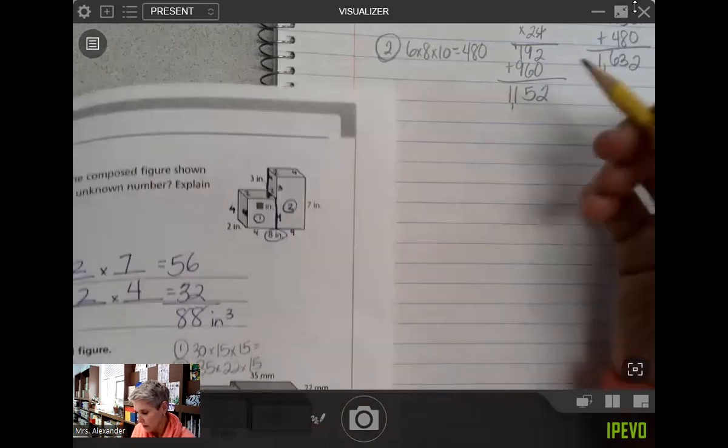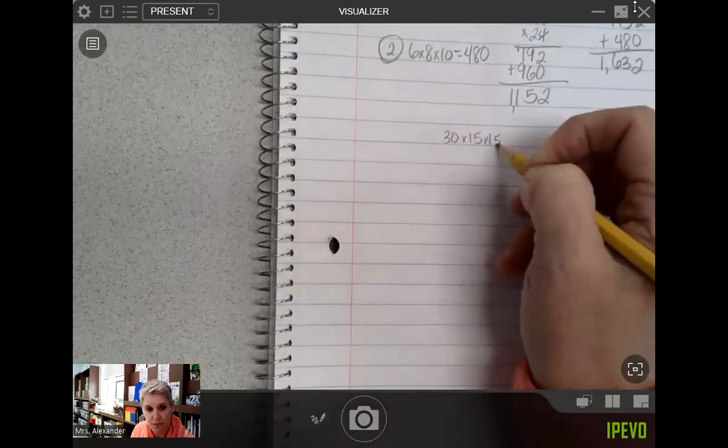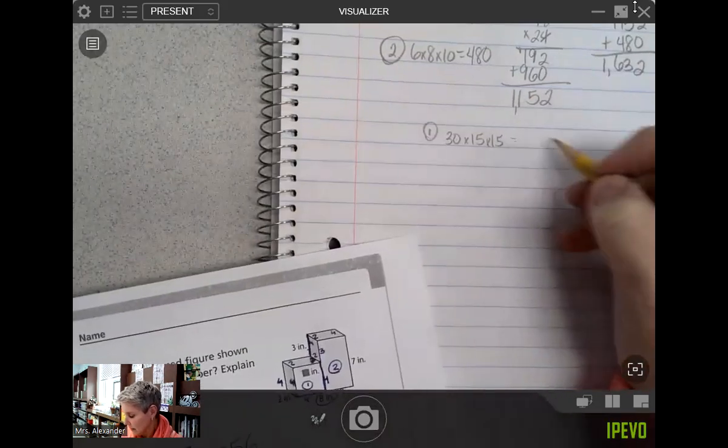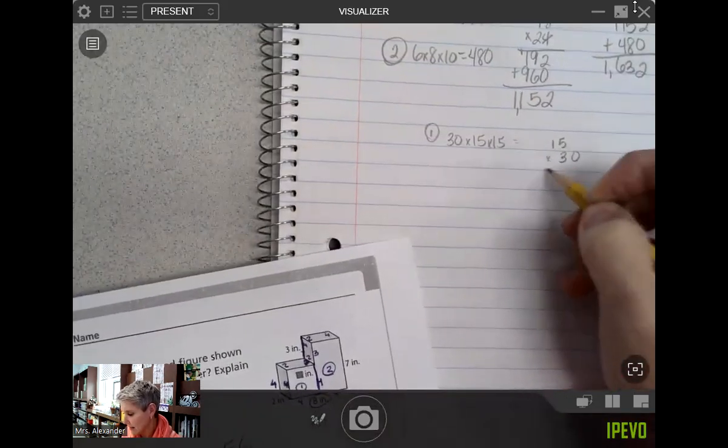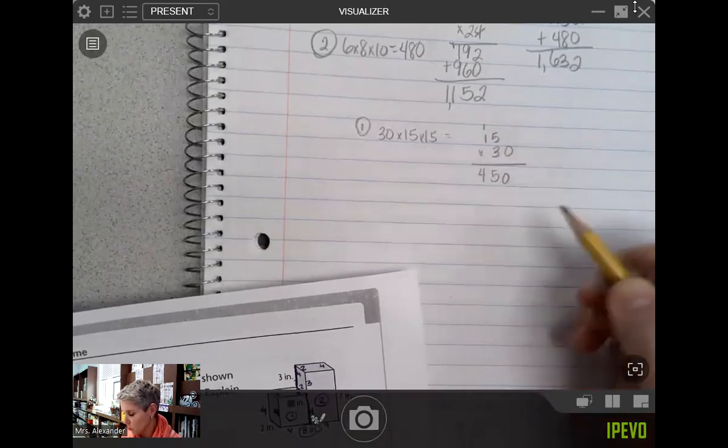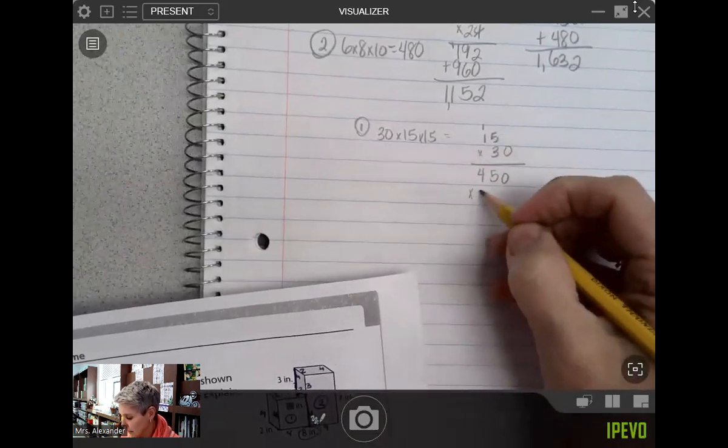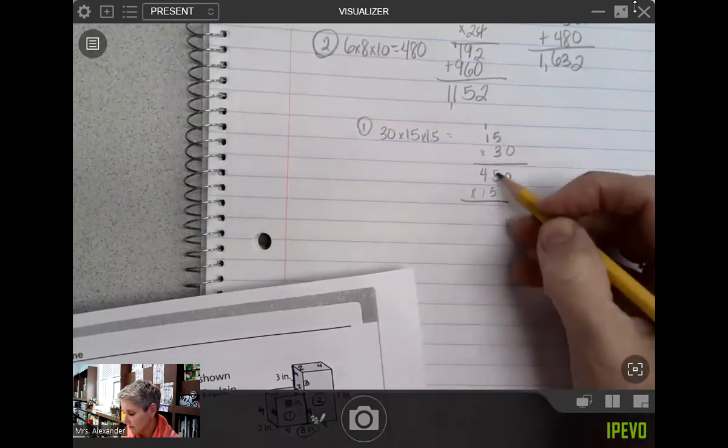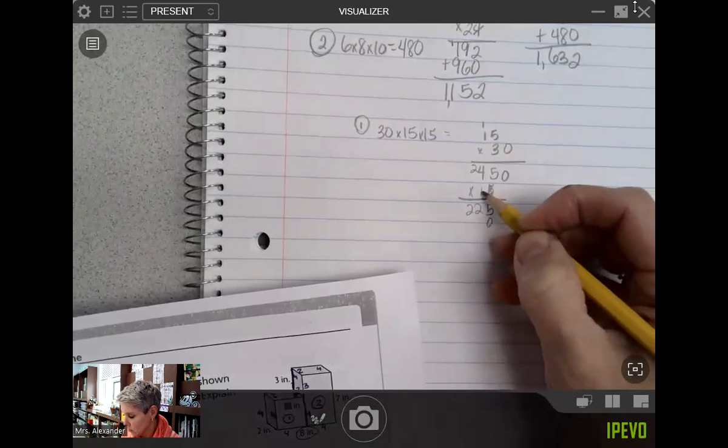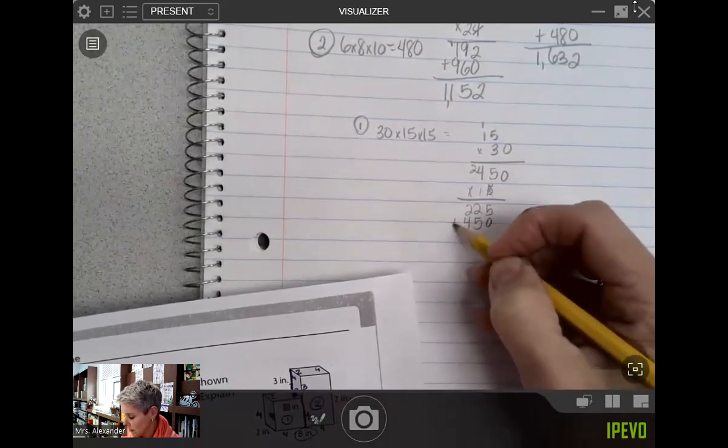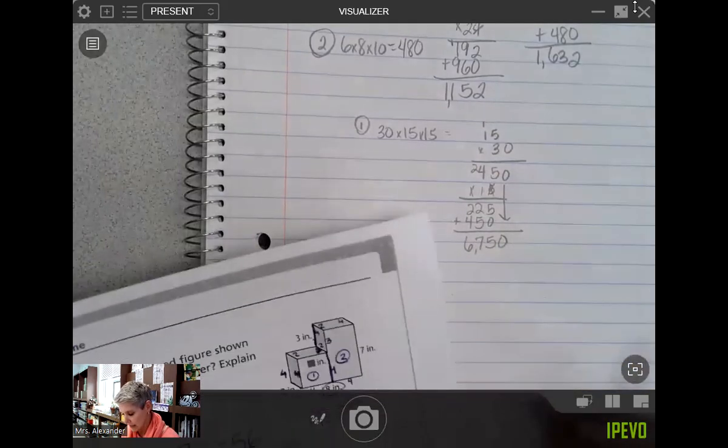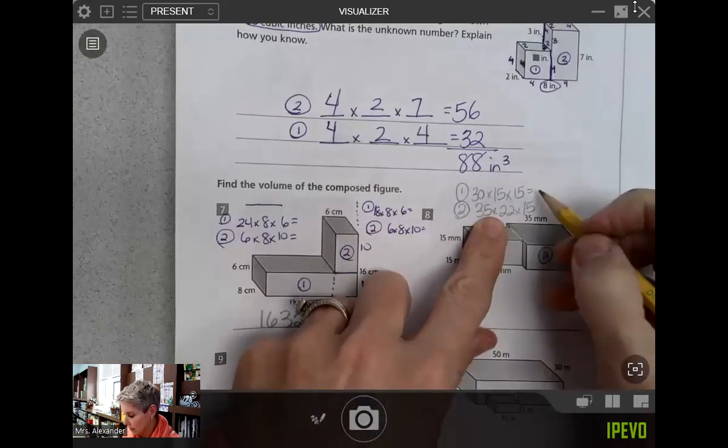So if I do figure 1, 30 by 15 by 15, that's what we're working on. I'm going to scooch this over a little bit. That was figure 1. If I do 15 by 30, I'm going to hang that zero. I have 3 times 5 is 15, regroup, 3 times 1 plus 1 is 4, 450. I still have to multiply that by 15. So I'm going to hang that zero again. 5 times 5 is 25. 5 times 4 is 20 plus 2 is 22. Zero placeholder. 1 times 5 is 5, 1 times 4 is 4. Add them up. I do have a zero that has to drop in here. And then I have 6,750 for figure 1.